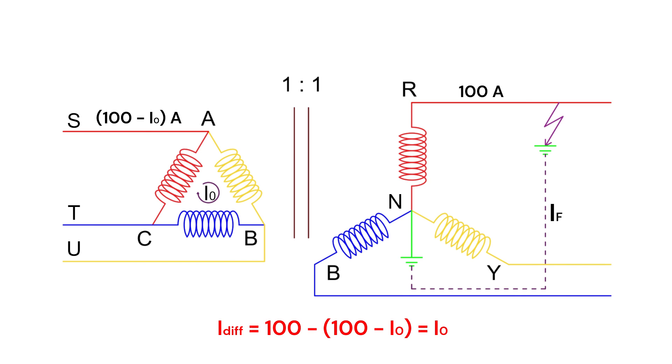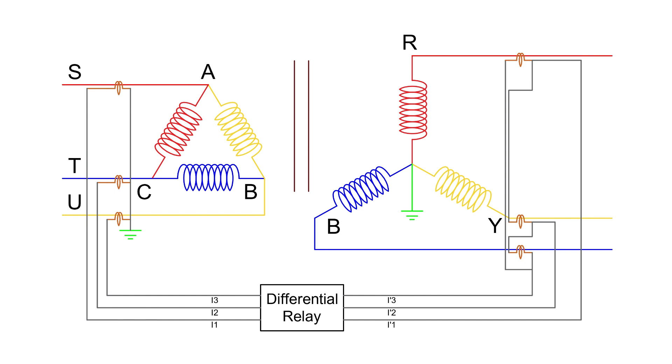Now, how do we eliminate the zero-sequence current? Traditionally, this was achieved through proper selection of current transformer, or CT connections. For a delta-star transformer, the CTs on the delta side are connected in star, while the CTs on the star side are connected in delta. But why?